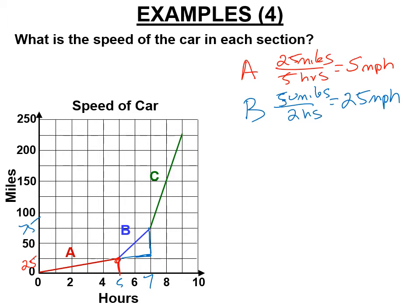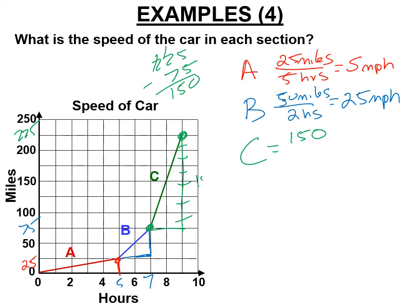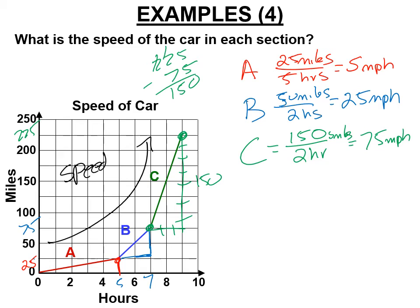In section C, it went from 75 to 225 — that's 150 miles (six boxes, each worth 25). That took two hours, so 150 divided by two gives us 75 miles per hour. Notice how this graph is bending the other way — this is speeding up. We started at five miles per hour, it took five hours just to go 25 miles. Then we sped up to 25 mph in the blue section, and then in C we're going 75 mph — much, much faster.